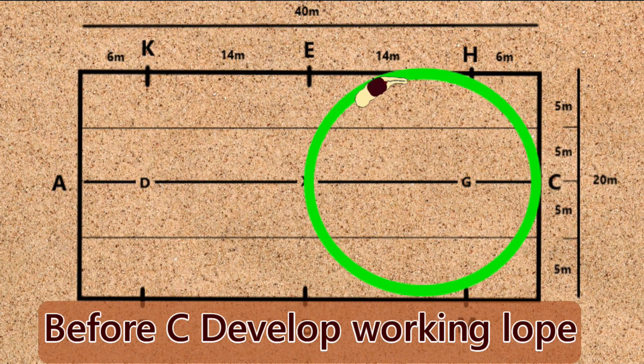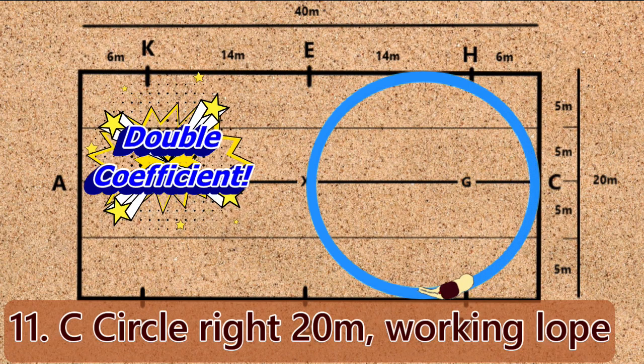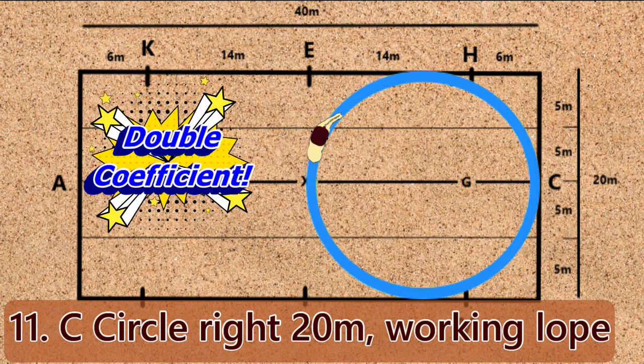Before C, develop working lope rightly. Movement 11: C, circle right 20 meters working lope.